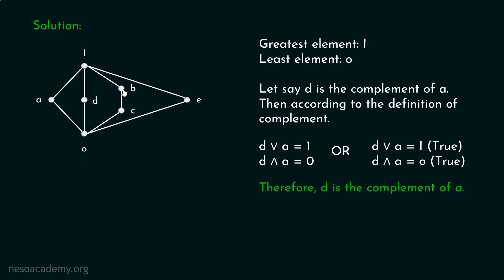Similarly, B is also the complement of A, because the least upper bound of B and A is I, and the greatest lower bound of B and A is O. C is also the complement of A, because the least upper bound of C and A is I and the greatest lower bound of C and A is O. E is also the complement of A, because the greatest lower bound of E and A is O and the least upper bound of E and A is I.